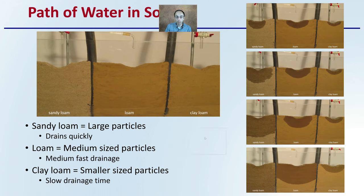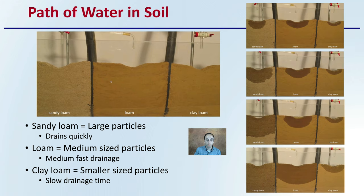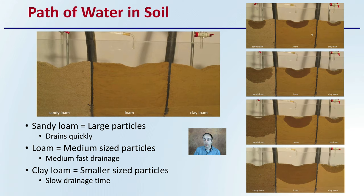Now looking at the path of water in soil, we're comparing a sandy loam, a loam, and a clay loam — large, medium, and smaller sized particles respectively. Sandy loams drain very quickly, the medium loam has medium-fast drainage, and clay loam drains more slowly. We're simulating a rain event or drip irrigation at a consistent rate. The sandy loam fully saturates by the end of the test period, the loam is slower, and the clay loam is much slower to have water percolate through.